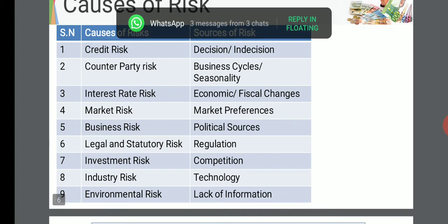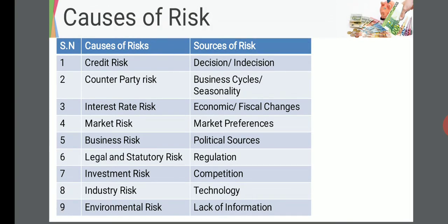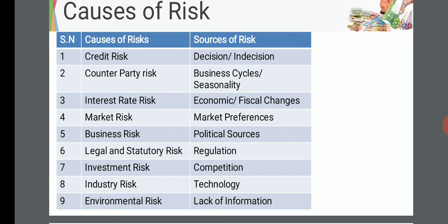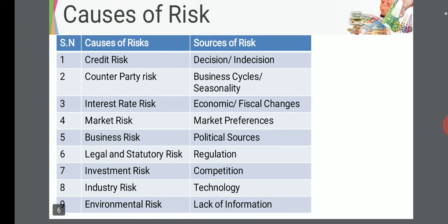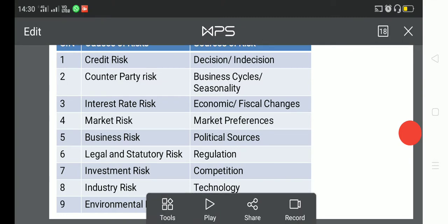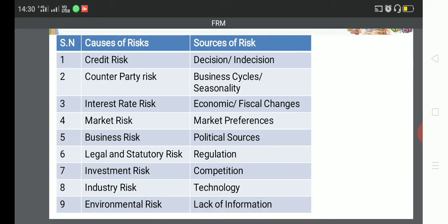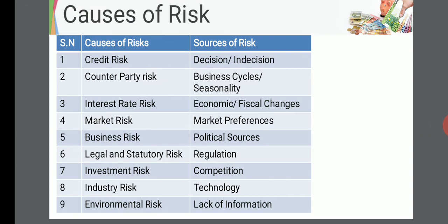Market risk is related to market conditions and the overall economy. Business risk affects a particular business — for example, a risk related to the education sector is a business risk. Legal and statutory risk involves changes in laws by the government that may make returns difficult. Investment risk is whether the investment you have made will return with proper profit. Industry risk is related to a particular industry — for example, real estate industries have problems these days. Environmental risk relates to deforestation, climate change, and CO2 emissions.